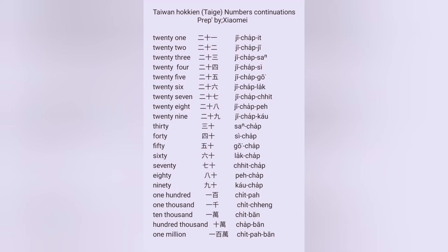Okay, twenty-one: di-chap-it, di-chap-di, di-chap-sa, di-chap-si, di-chap-go, di-chap-lap, di-chap-ti, di-chap-pwe, di-chap-kaw. Sa-chap — thirty.